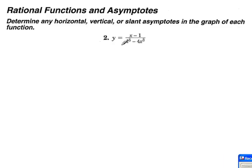Okay, so the first thing we want to do is determine any vertical asymptotes that we can find, and we do that by setting the denominator equal to 0.